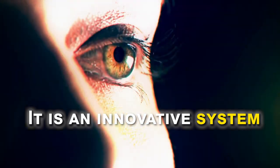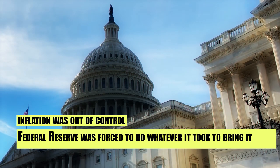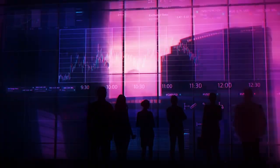It is an innovative system. According to Charlie Munger, the current state of the market is similar to that in the 1970s when inflation was out of control and the Federal Reserve was forced to do whatever it took to bring it down, even if doing so caused a recession.